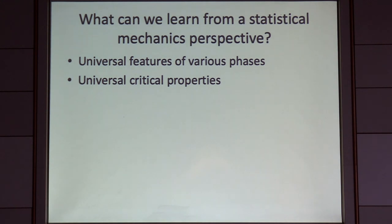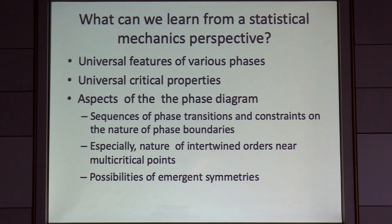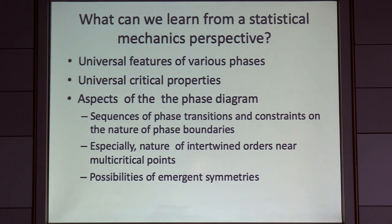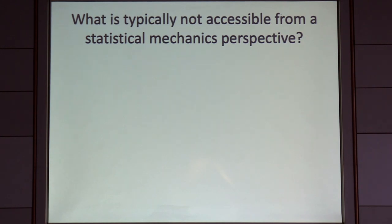Famously, statistical mechanics is the right way to look at universal critical properties, where 'universal' really has an enormous amount of meaning — we can solve absolutely the wrong problem and make quantitative predictions about what you'll see in the laboratory. More vaguely, there are aspects of the phase diagram of materials one can hope to learn about: what are allowed sequences of phase transitions, what are the constraints on the nature of phase transitions, what sorts of intertwined orders appear especially near multi-critical points, and possibilities of emergent symmetries.